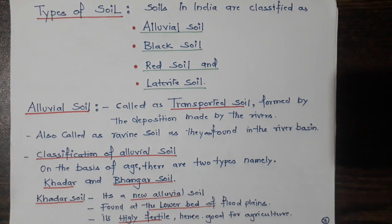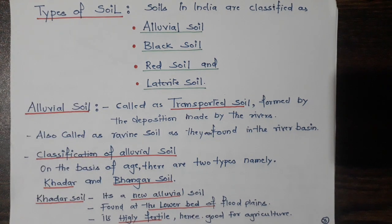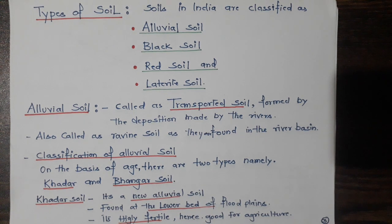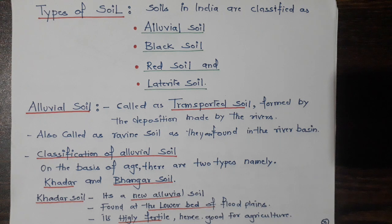The heavier load left behind is Bangar soil, and the finer load carried forward is known as Khadar soil. Khadar soil is always deposited in the lower beds of the river valley, whereas Bangar soil is formed on the upper terrace of the river valley, which is comparatively less fertile and less suitable for agriculture. Bangar has lime nodules, is porous, and cannot retain moisture. Khadar soil, on the other hand, is the new soil found at the lower beds of the river and is highly fertile, hence very good for agriculture.